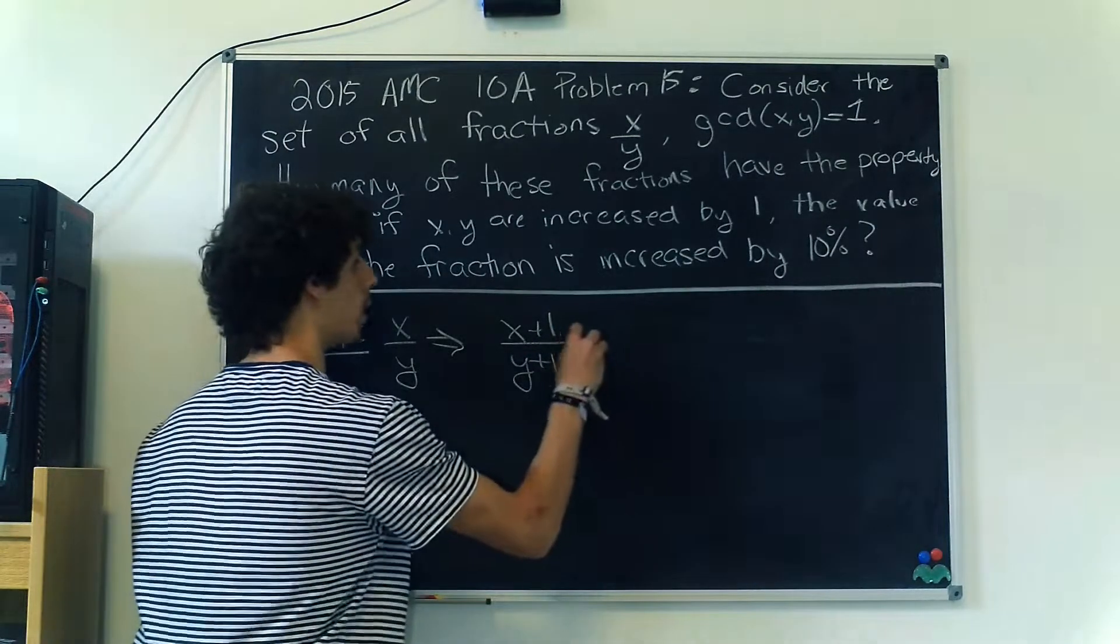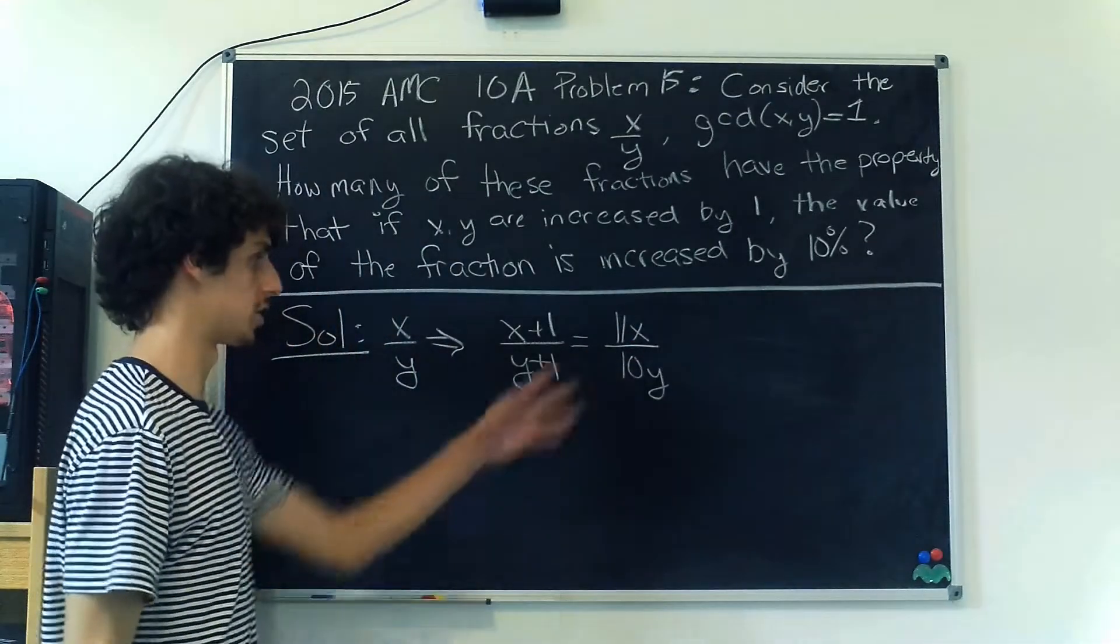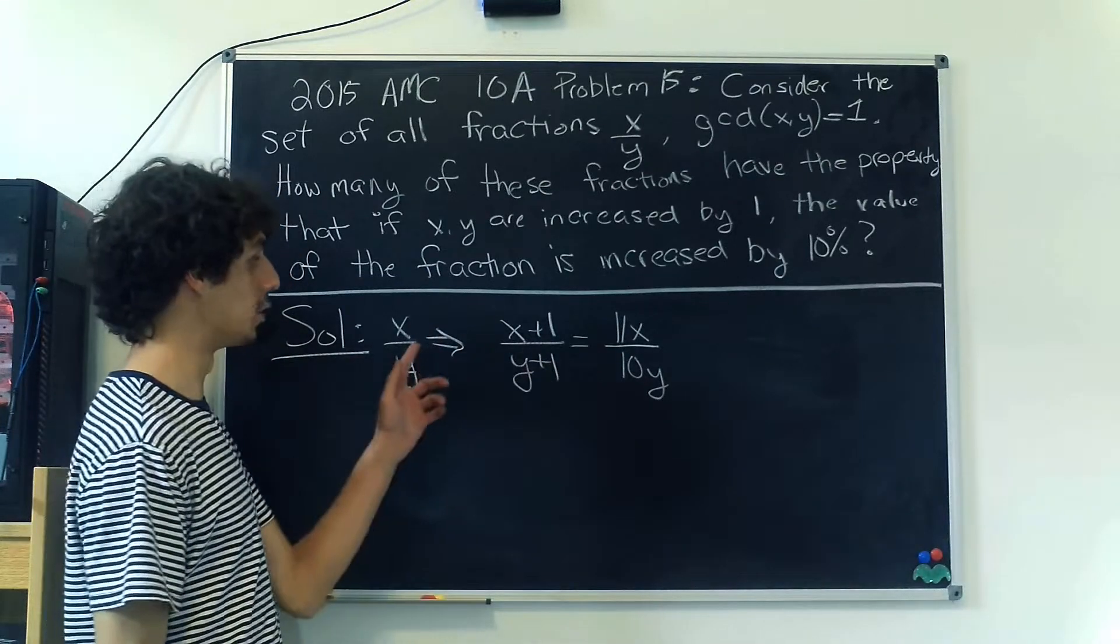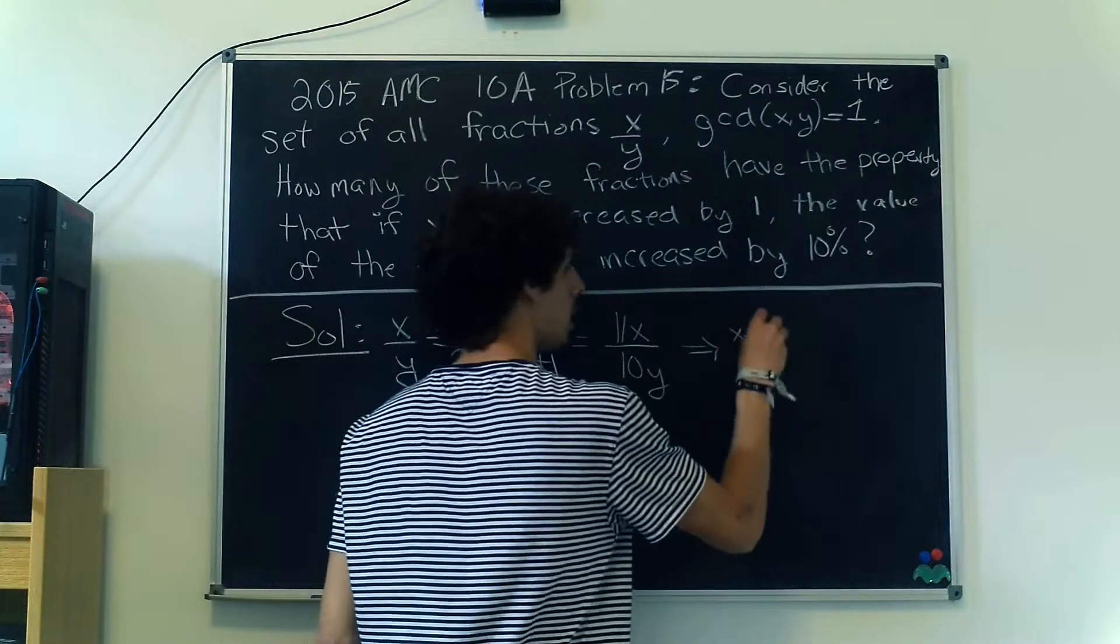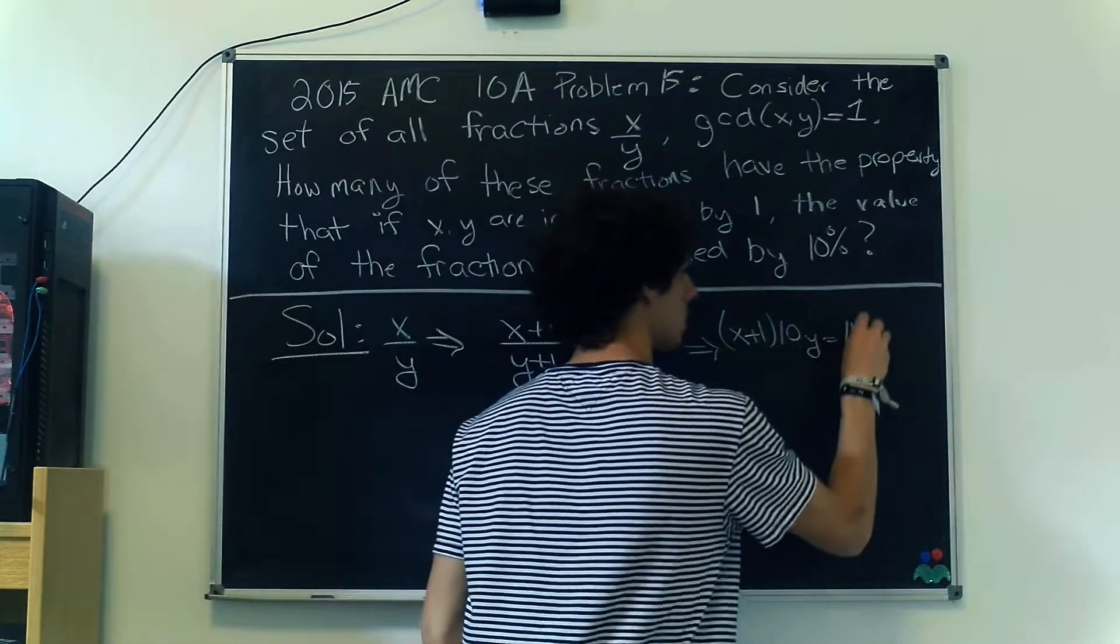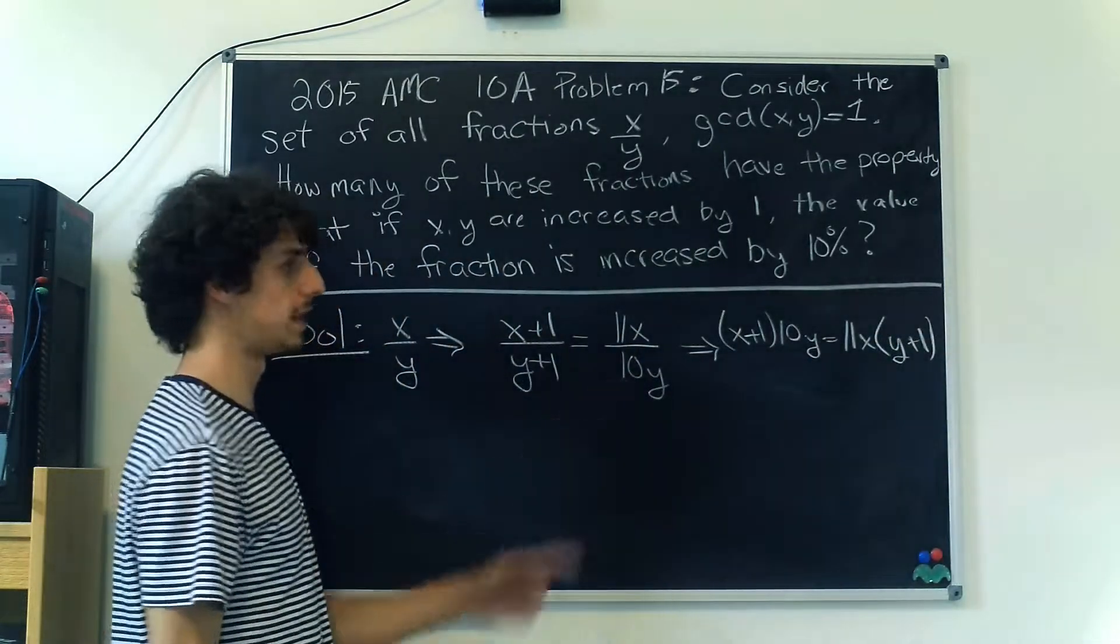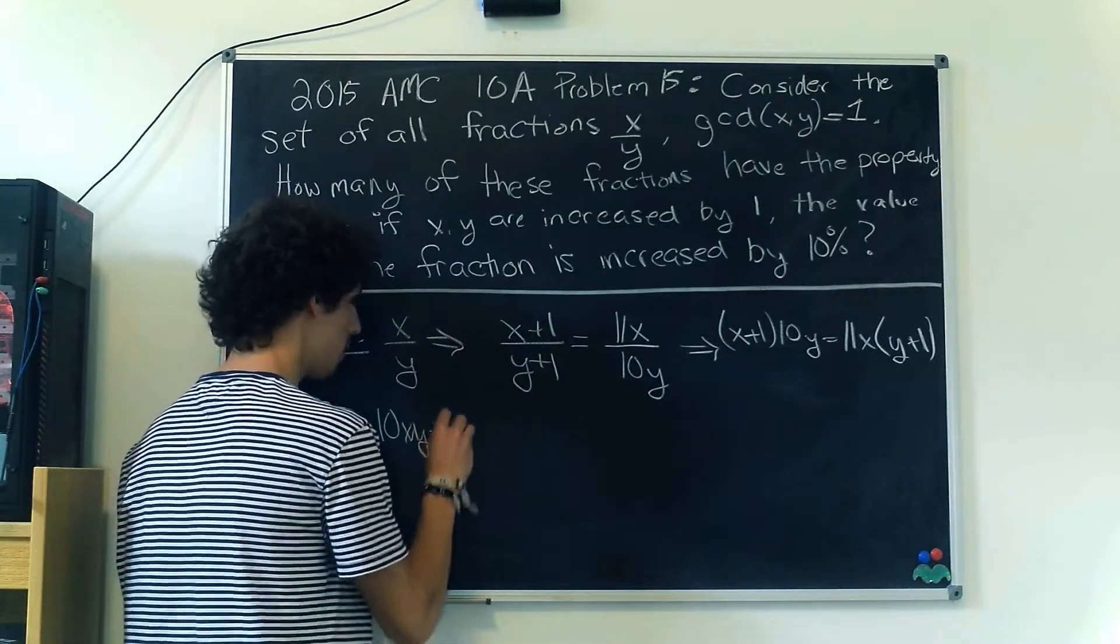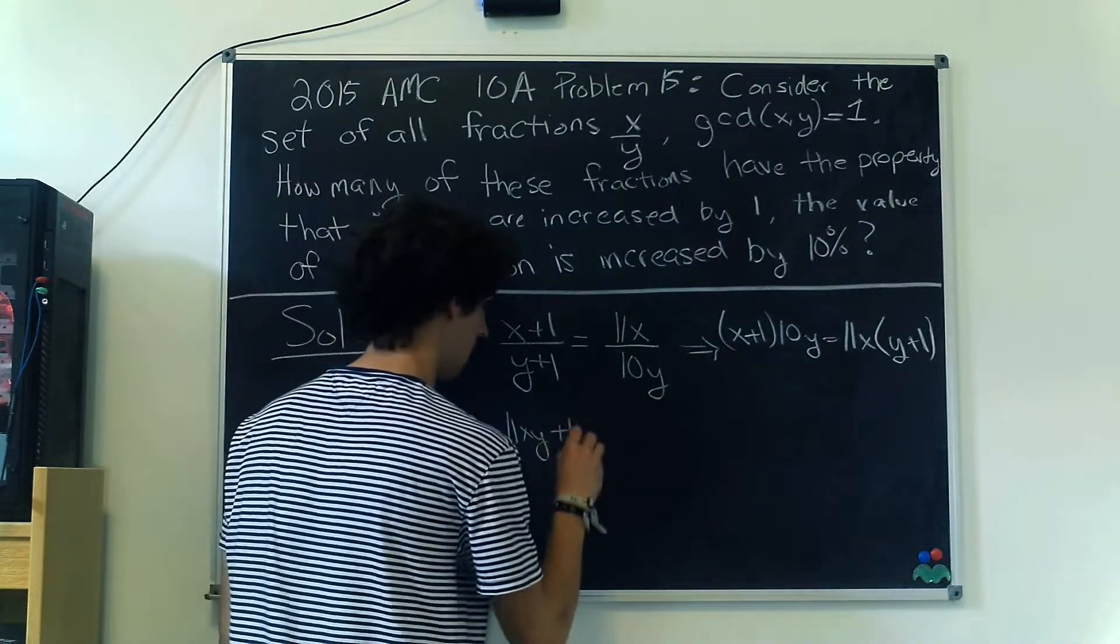When we increase x and y by 1, that's (x+1)/(y+1), we want the resulting fraction to be 11/10 of the original fraction. So (x+1)/(y+1) = 11x/10y. Now we can cross multiply: (x+1)(10y) = 11x(y+1). Expanding that out, we get 10xy + 10y = 11xy + 11x.